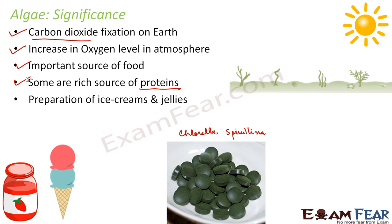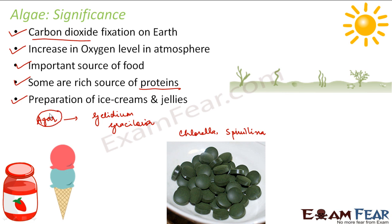Another significance is the preparation of ice creams and jellies. There is something called agar, which is obtained from algae called Gelidium and Gracilaria. Agar obtained from these algae helps in the preparation of ice creams and jellies. Preparing these at home requires many ingredients, and this agar is one of the essential ones. So algae play an important role in the food industry as well.